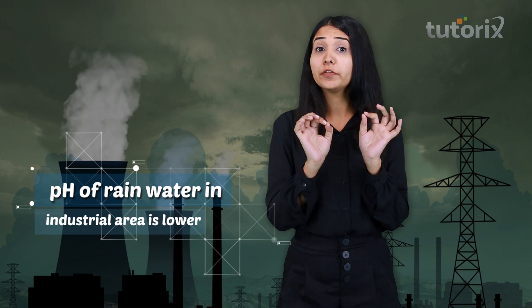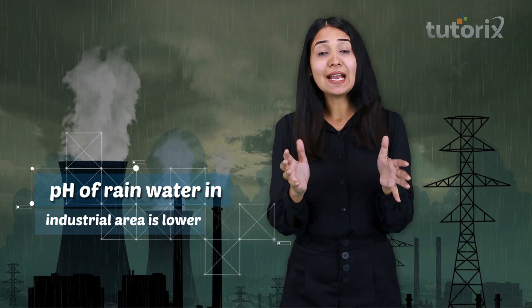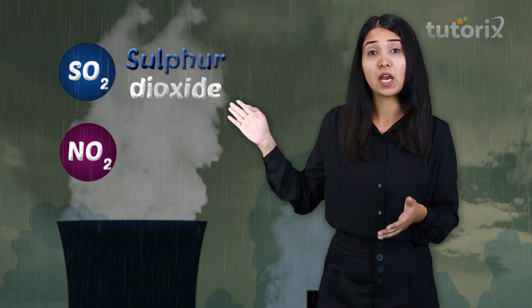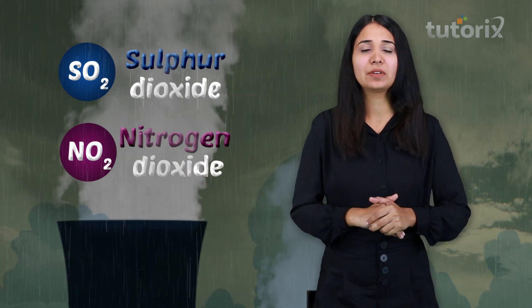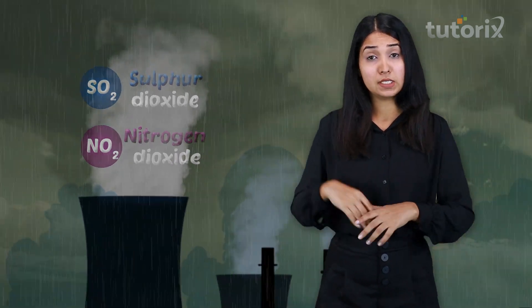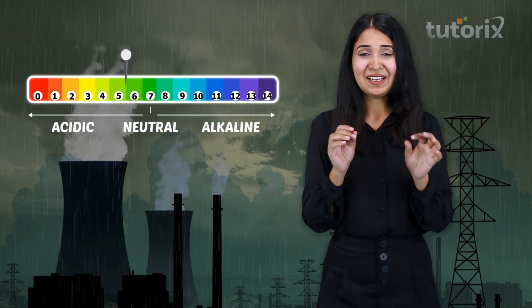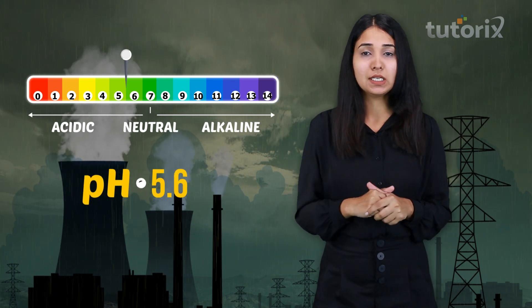The pH in the rainwater of industrial areas becomes less. This is because in industrial areas there is the release of acidic gases like sulfur dioxide or nitrogen dioxide. Because of the presence of these gases in the environment, the pH of the rainwater also decreases.